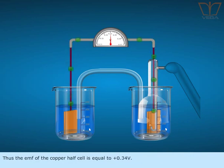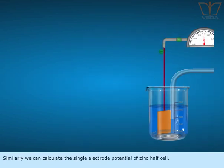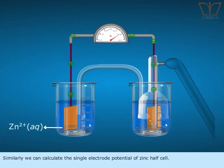Thus, the EMF of the copper half cell is equal to plus 0.34 volt. Similarly, we can calculate the single electrode potential of zinc half cell.